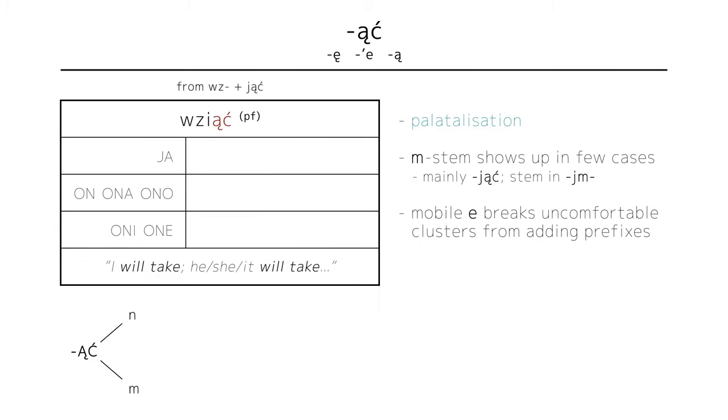Similarly, wziąć, which actually comes from jąć, prefixed with wz-, and is slightly irregular, but all the while worth discussing here, conjugates as wezmę, weźmie, and wezmą. We have the same endings and the mobile e, it's just the z that palatalizes with the m.